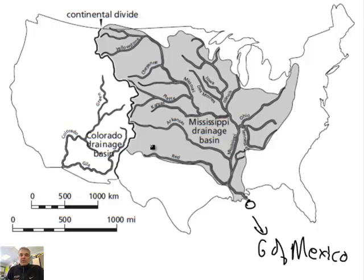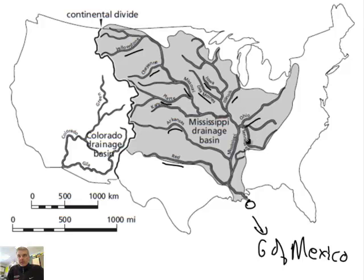This is the drainage system for the Mississippi River. Here we've got some major rivers that feed this: the Red River, the Arkansas River, the Platte River — which is kind of part of the Missouri River — the Cheyenne River, the Yellowstone River, the Iowa, the Des Moines, the Illinois, the Ohio River, and the Tennessee River. They all flow right through here.